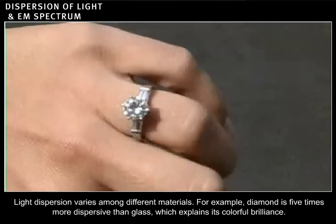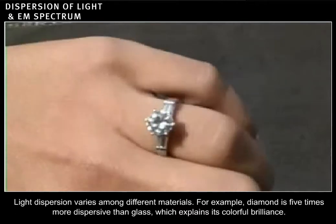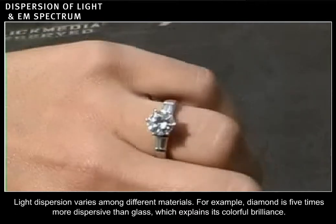Light dispersion varies among different materials. For example, diamond is five times more dispersive than glass, which explains its colorful brilliance.